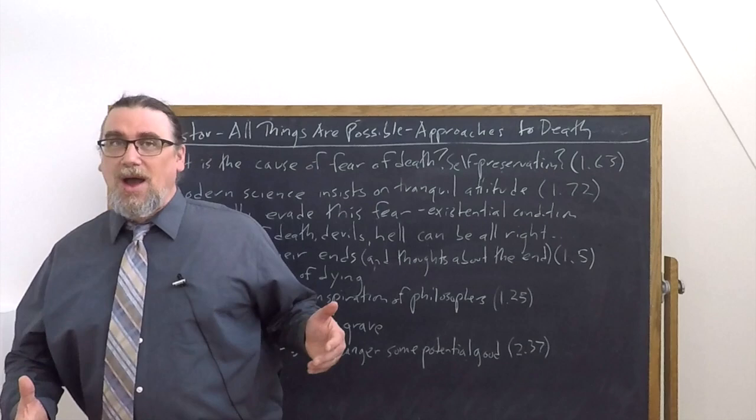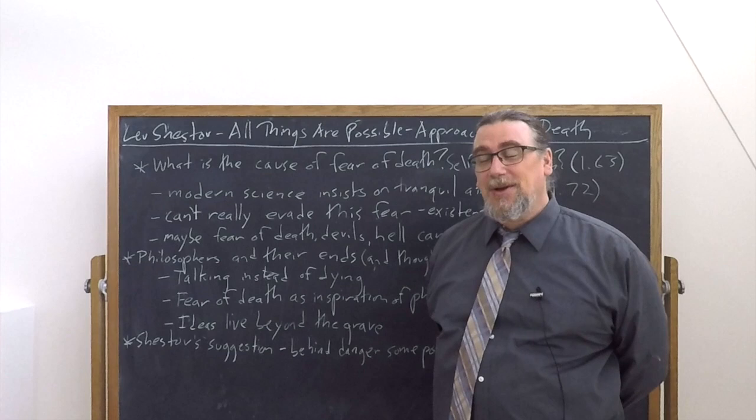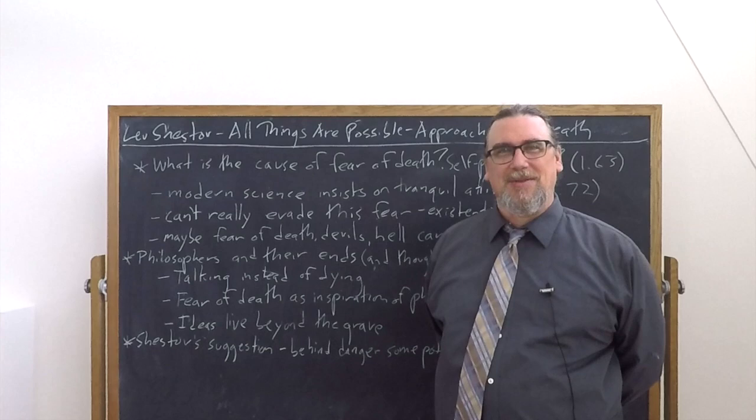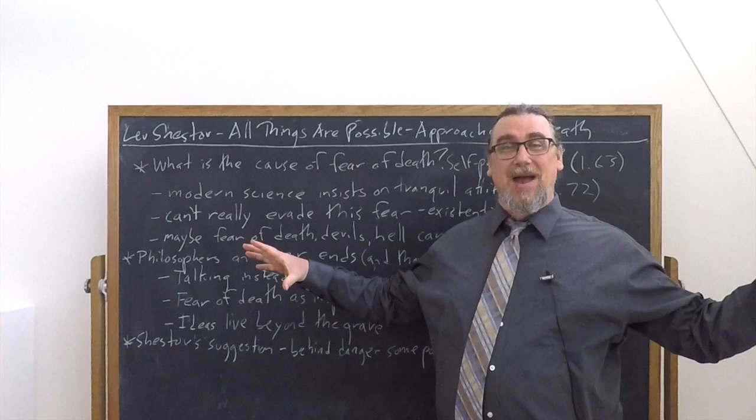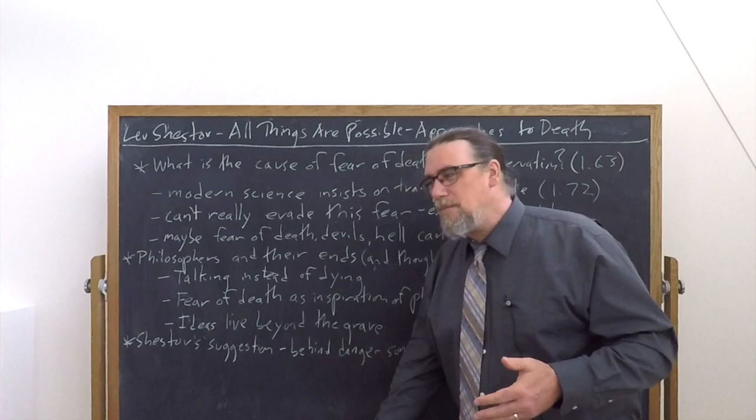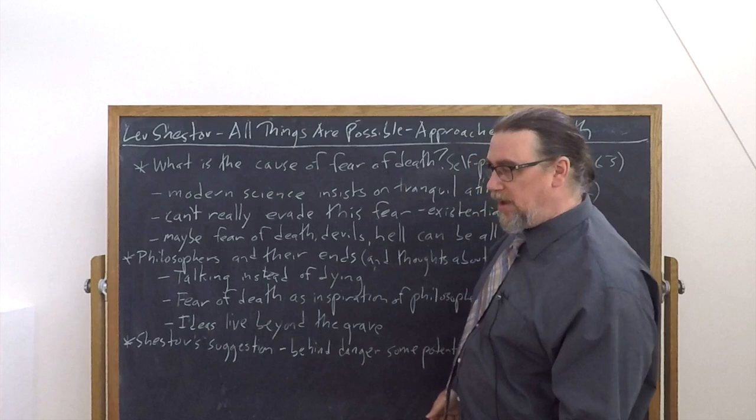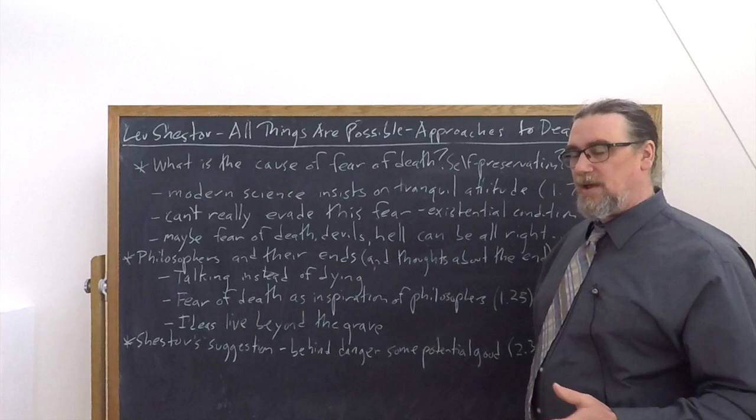And then Shestov gives you a little bit of a twist. He says, it's not really whether he did that. We have to make an additional assumption here that he was wrong in doing that. Maybe fear of death, devils, hell can actually be all right. Maybe that can be what we ought to do. I mean, we can have all sorts of different configurations. It doesn't necessarily have to be Dante's Inferno with all the different levels.